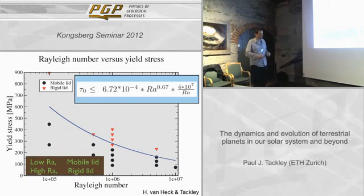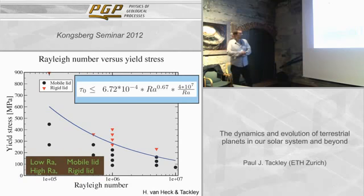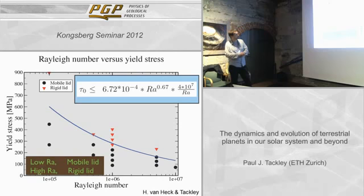By running a lot of experiments and comparing with theory, you can develop some scalings and predict whether you should be in the stagnant lid or mobile lid mode as a function of Rayleigh number and yield stress, and also as a function of internal heating rate.